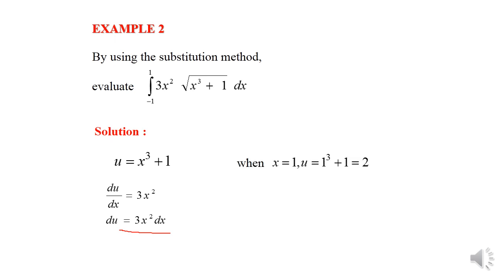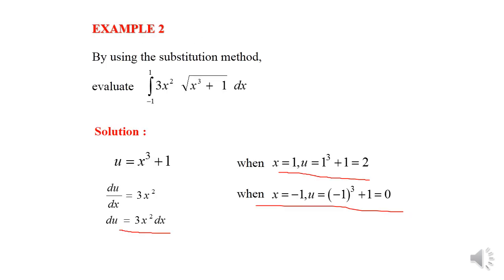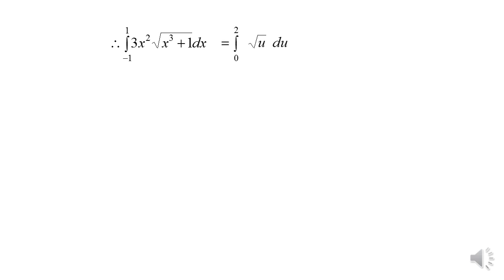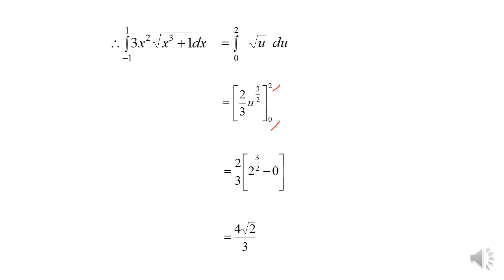When we substitute x = 1, we get u = 2. When we substitute x = −1, u becomes 0. So the integration of 3x²·√(x³+1) dx from −1 to 1 equals the integration of √u du from 0 to 2. This gives us (2/3)u^(3/2) evaluated from 0 to 2, and our answer is 4√2 over 3.